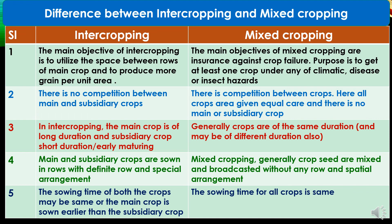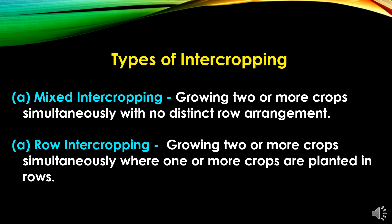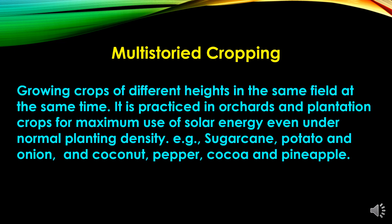Fifth, in intercropping the sowing time of both crops may be the same or the main crop is sown earlier than the subsidiary crop, while in mixed cropping the sowing time for all crops is the same. Now the types of intercropping: the first is mixed intercropping — growing two or more crops simultaneously with no distinct row arrangement; the second is row intercropping — growing two or more crops simultaneously where one or more crops are planted in rows.